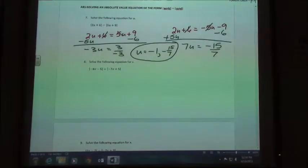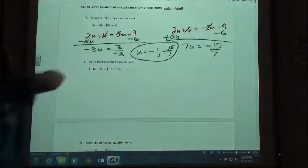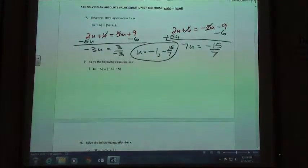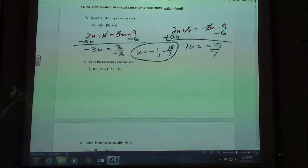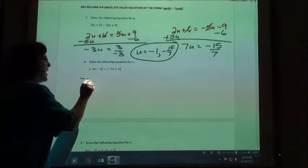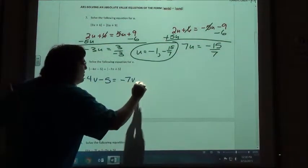So in these ones where you have absolute values on both sides, you're always going to do two cases, they'll call them, two separate problems to solve. So number 8, again my first problem, just the exact same problem without the absolute values. So negative 4v minus 5 equals negative 7v plus 5.